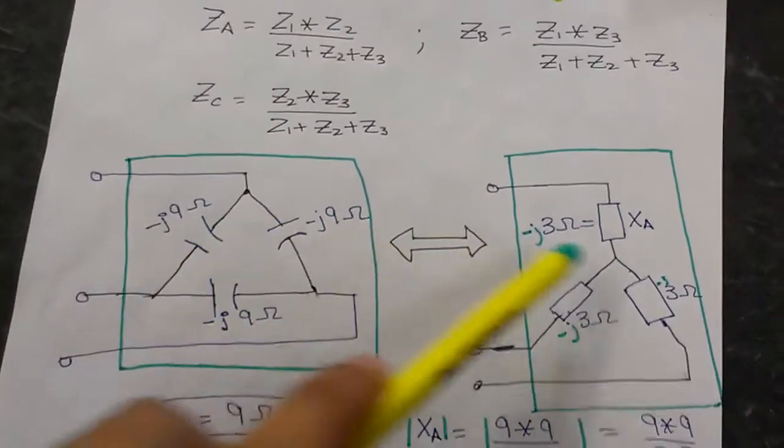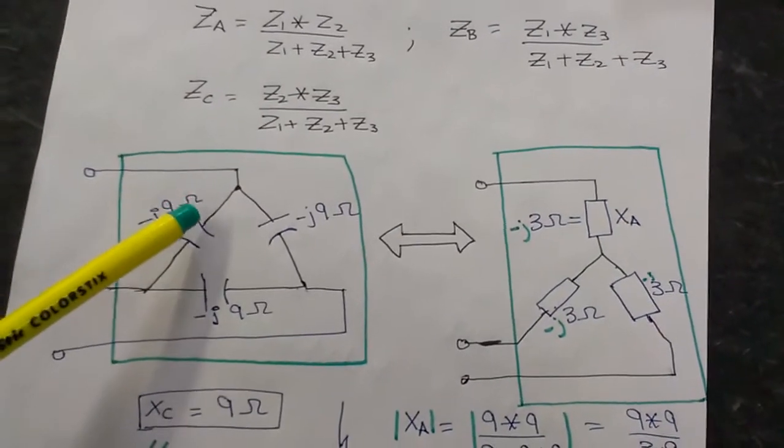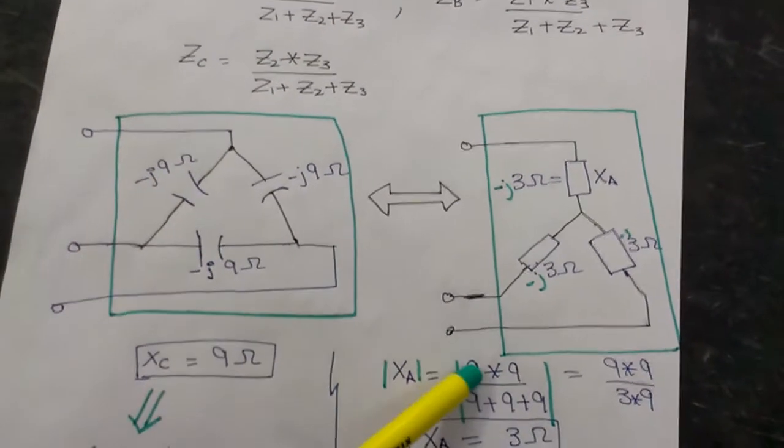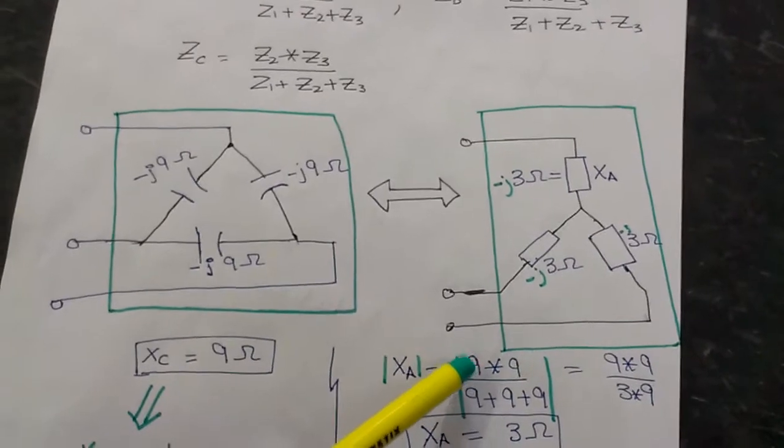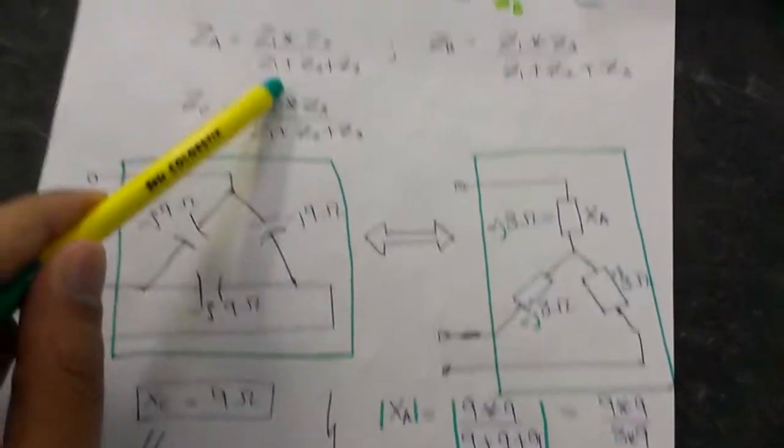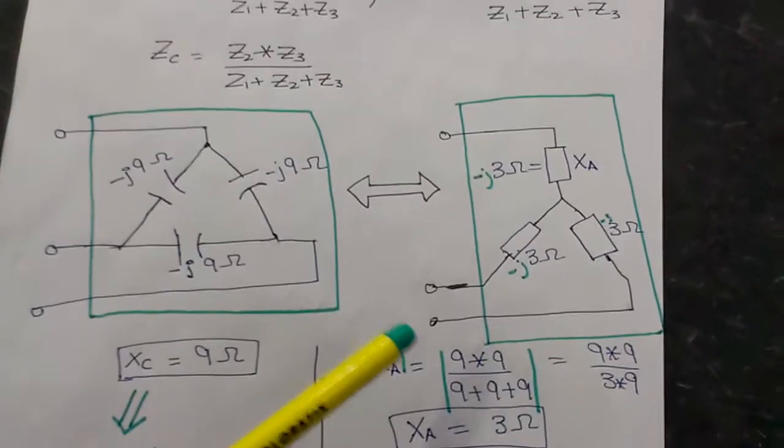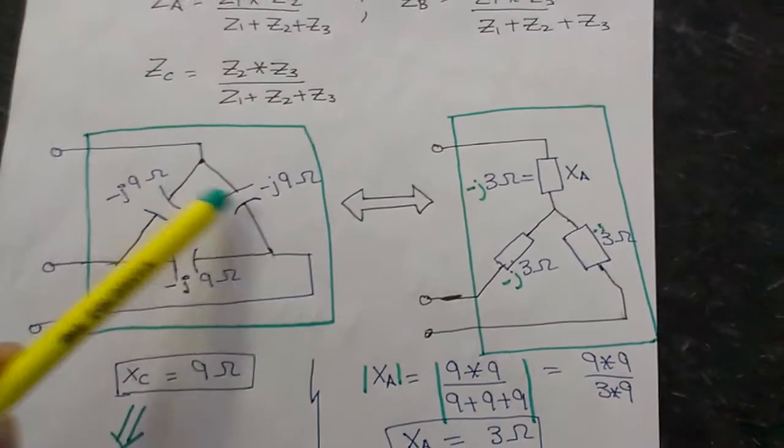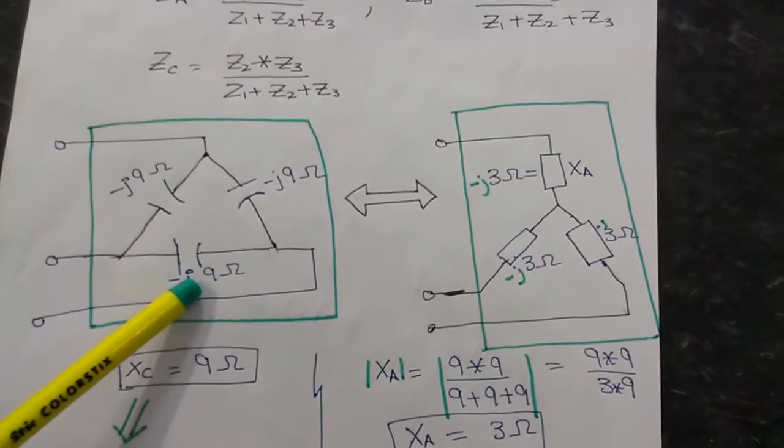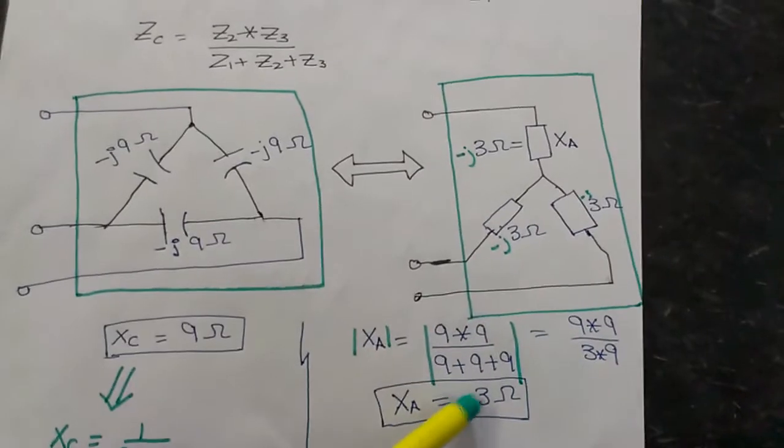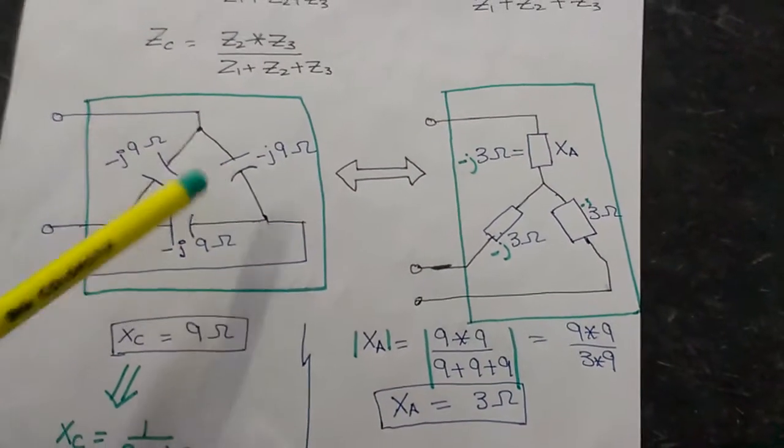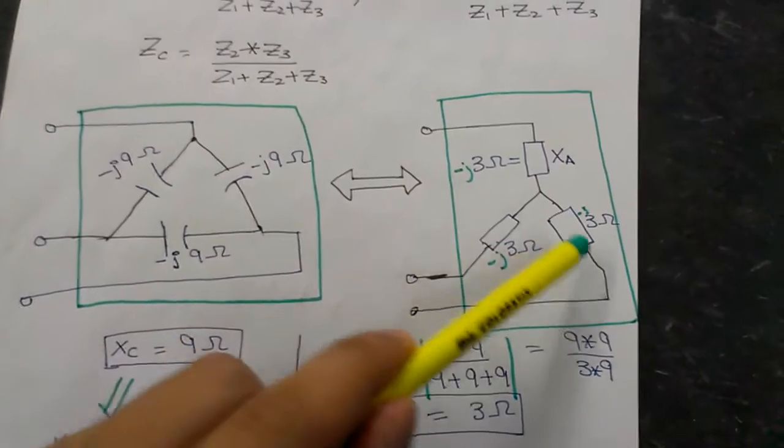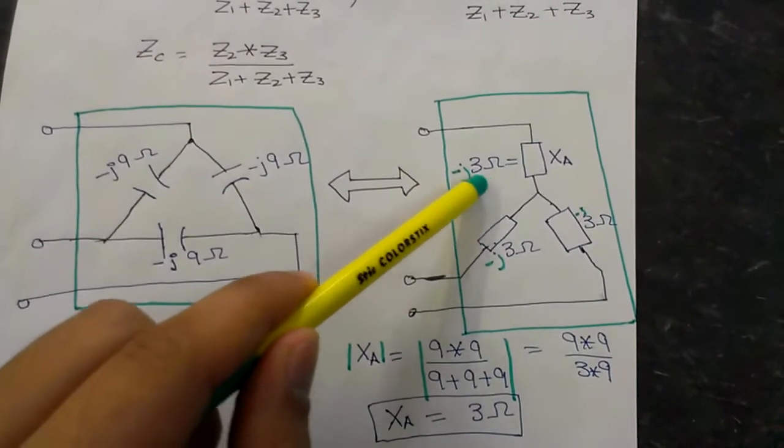Here we have nine, I'm just taking the magnitude here, nine into nine, as we have already discussed the formula here, nine into nine divided by the sum of these three reactances which will give you three ohms. As it is symmetrical, all of these three values will come out to be minus j three ohms.